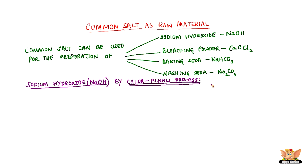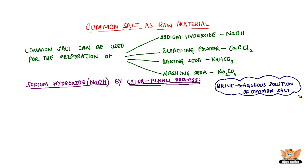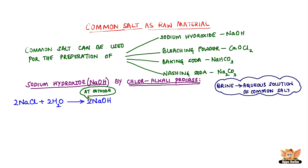Let's prepare sodium hydroxide from common salt by the chloralkali process. Brine is the aqueous solution of common salt. When electricity is passed through brine, sodium chloride decomposes to form sodium hydroxide near the cathode, with the liberation of chlorine at the anode and hydrogen gas at the cathode.